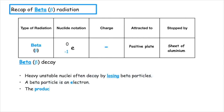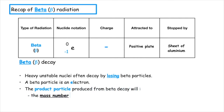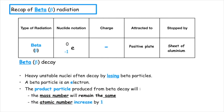Remember, a beta particle is an electron. The product particle which is produced from beta decay will have a mass number which will remain the same, but the atomic number of that new particle will increase by one.